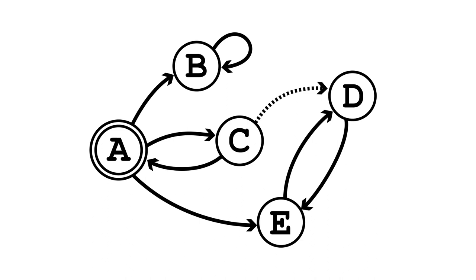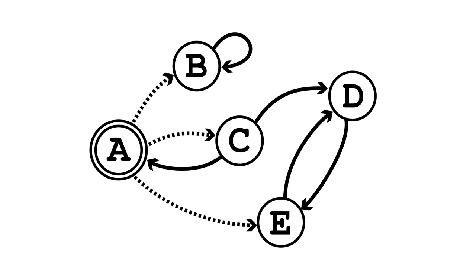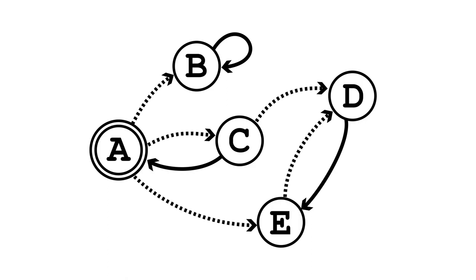Between the states are these edges, or links, each of which represents a possible way that the machine's state can change. In this example, it is possible to go from state A to states B, C, and E, but it isn't possible to go from state A to state D without first going through some other state.